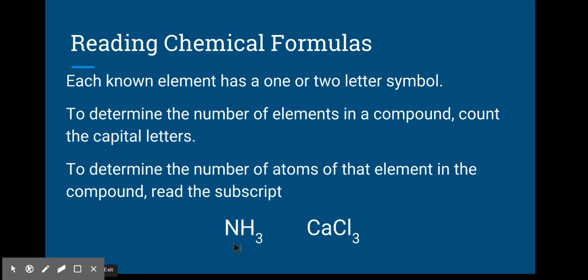Now with right here, NH3, which is ammonium, if you look at the end, there's no number written down here. So just like in math, when there's no number, you assume it's a one. So that means there's one nitrogen, and over here I see a three next to hydrogen, so there are three hydrogens.